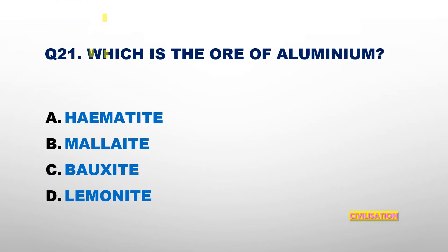Question number 21: Which is the ore of aluminium? Options: Hematite, Malite, Bauxite, or Laminite? The answer is Bauxite.